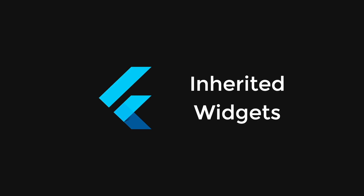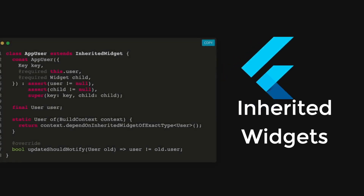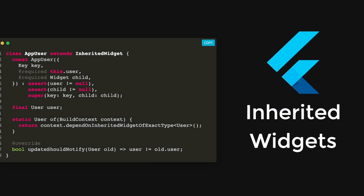To combat this hard-to-maintain structure, the Flutter team created something called inherited widgets that helps pass data down the widget tree. However, to pass a single object, you have to create a lot of boilerplate, which can be very confusing for beginners.